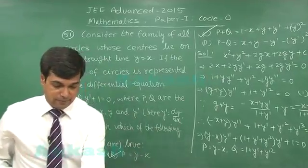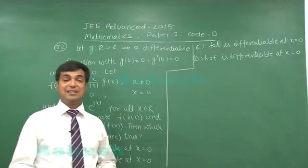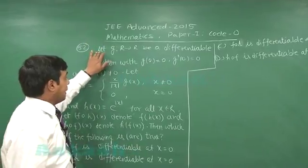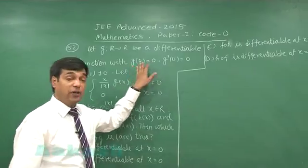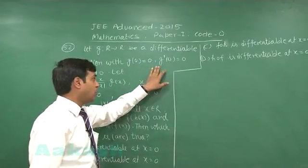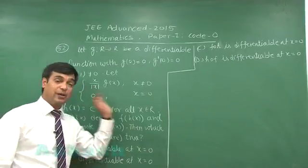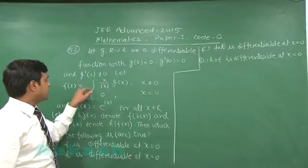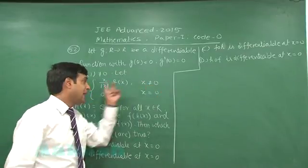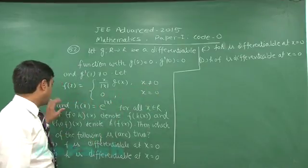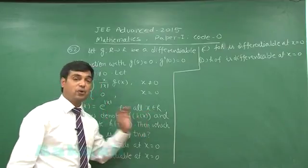Let us move to the next one, question 52. Let g: ℝ → ℝ be a differentiable function with g(0) = 0, g'(0) = 0, and g'(1) ≠ 0. Let f(x) = (x/|x|)·g(x) whenever x ≠ 0 and 0 whenever x = 0, and h(x) = e^|x| for all real values of x.